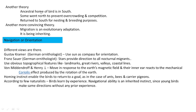Another theory states that the ancestral home of birds was in the south, and some migrated north to prevent overcrowding and avoid competition. They return to the south only for breeding. A third, more convincing theory holds that migration is an evolutionary adaptation — a behavior developed for adaptive value and inherited from one generation to the next.